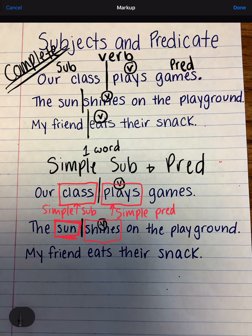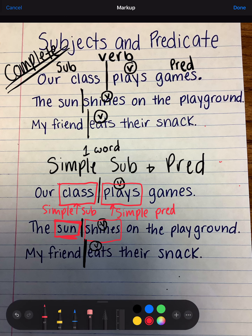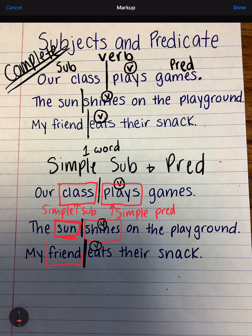Let's look at our last one together. My friend eats their snack. Which is the verb? Eats. Where am I going to draw my line? My line to separate my complete subject and my complete predicate is right here, before the verb. Let's look at our subject. My or friend — which word is the simple subject? The simple subject is the word friend. That's the one word I can pick out that does an action. My complete predicate is eats their snack. Friend does what? Friend eats. So eats is going to be the simple predicate.